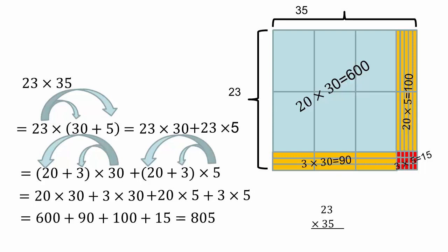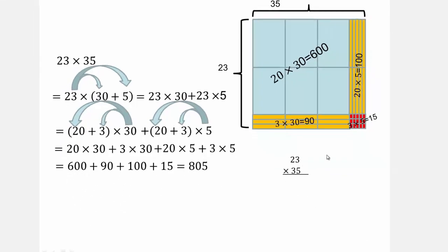Most of you are probably used to seeing multiplication in this manner. I want you to be able to do all three ways because it will give you a really good sense of what multiplication is. So write down the numbers — don't worry about decimal points yet. So 5 times 3 is 15, but since this is in the 10s spot we do a carryover. 5 times 2 gives me 10 plus 1 is 11.